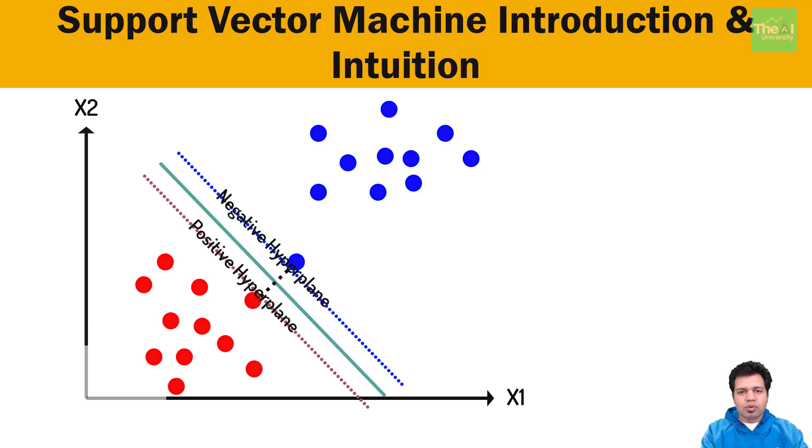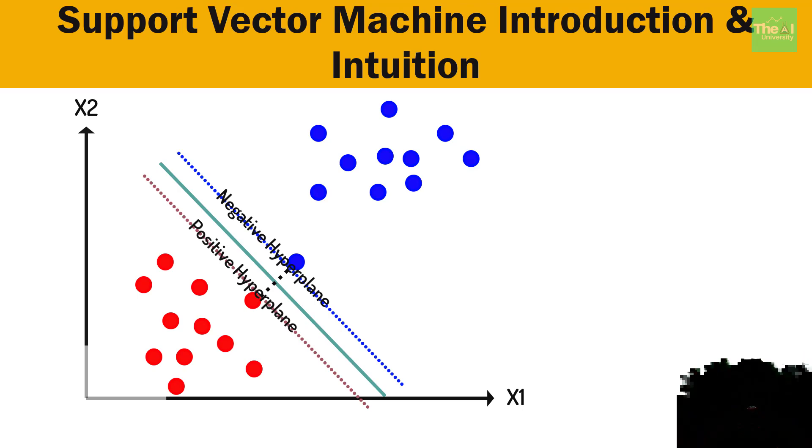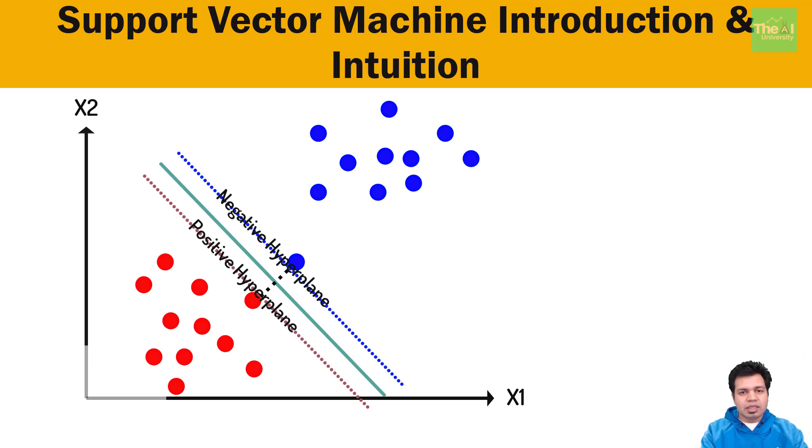These two points shown here are considered as support vectors because these are the points which govern the entire algorithm. Even if you remove all other data points, still these two points will govern the SVM algorithm as other data points don't contribute much to the output of the algorithm. These two data points are considered as vector hence the name of the algorithm is given as support vector machines.